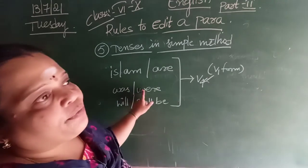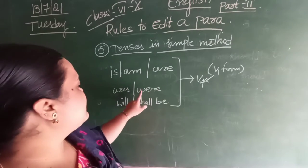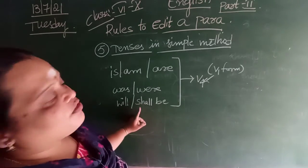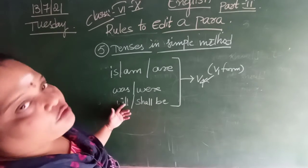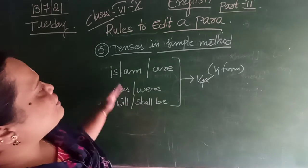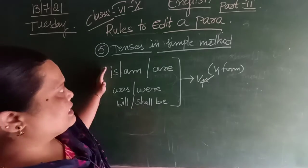Was, were — we will be using in past tense. Will, shall be — we will be using in future tense. So whenever we will be using sentences like this, the verb following these tense helpers should be in V4 form.